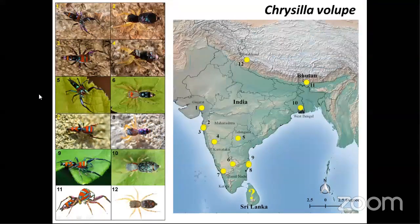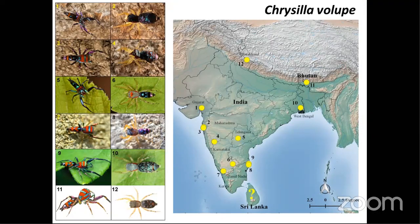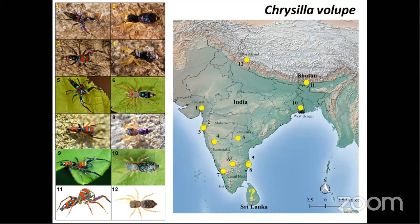There are two different shortfalls that we see: the Linnaean shortfall and the Wallacean shortfall. The Linnaean shortfall refers to the fact that about 80 to 85% of Earth's diversity has not been explored and most species remain undescribed. The Wallacean shortfall is where we don't have enough distributional data — even when a species is described, the distributional data is very scarce.